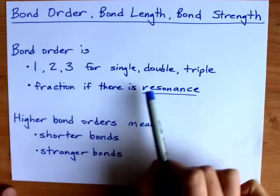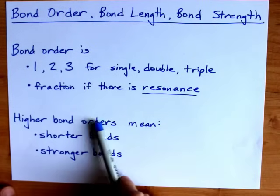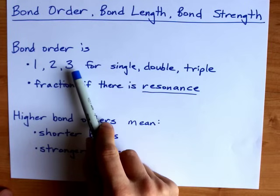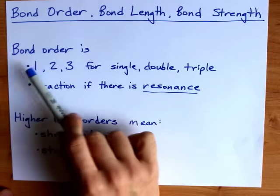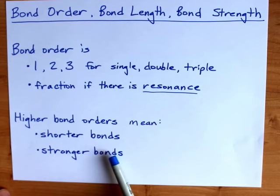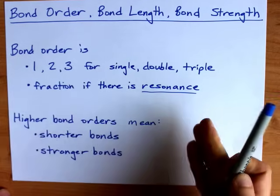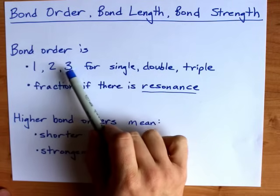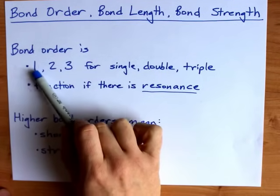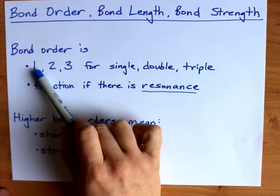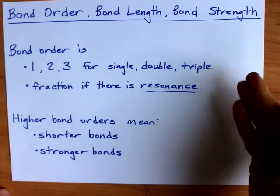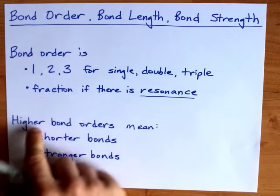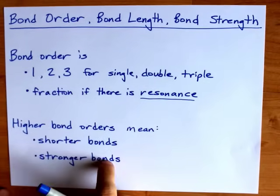No matter what the bond order ends up being, a higher bond order will generally mean a shorter bond and a stronger bond. That should make sense because the triple bond actually has a single bond hidden within it, plus two extra pi bonds on top that you need energy to break. So higher bond orders mean shorter bonds and stronger bonds.